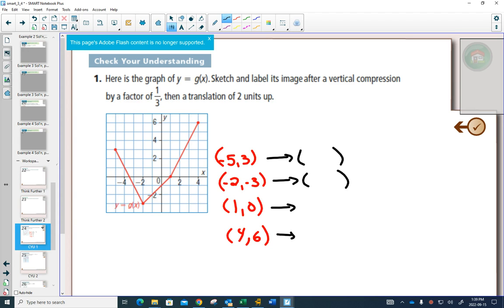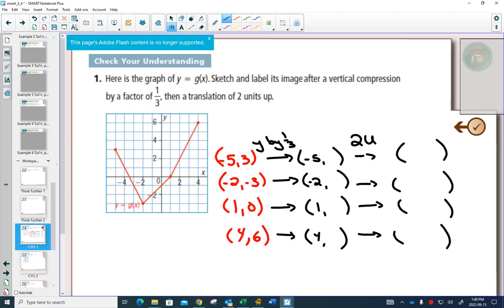We'll have to do two sets. And it's always that you always have to do stretches and compressions first and always have to do translations second. A vertical compression by one-third means I multiply my y by one-third. Two units up, that's a translation. I'll do that second. Y by one-third means my x values are not going to change. I can quickly write them all down because they're not going to change. Multiplying y by a third, this will become 1, this will become negative 1, stays 0, this will become 2.